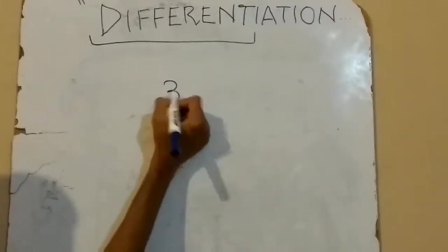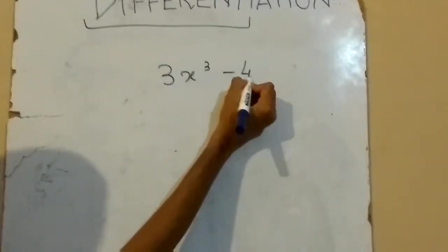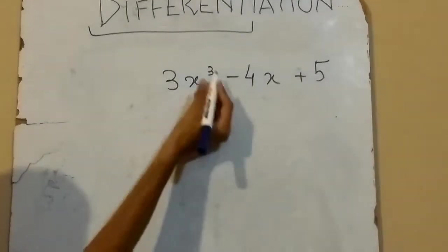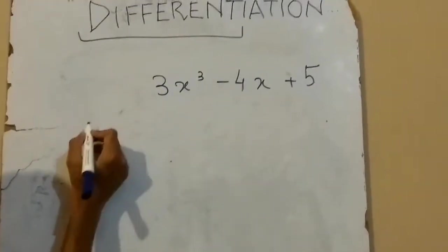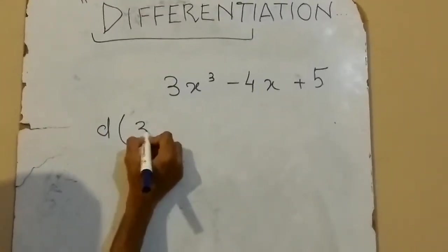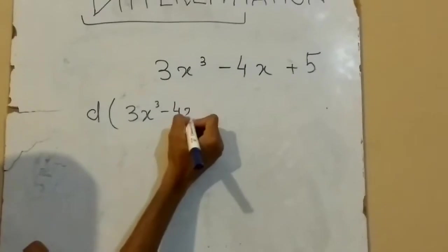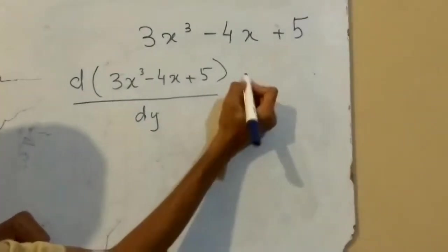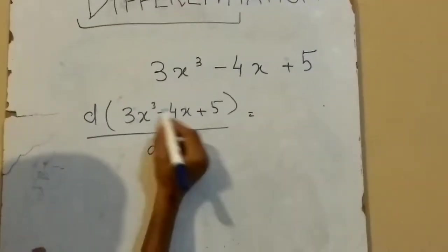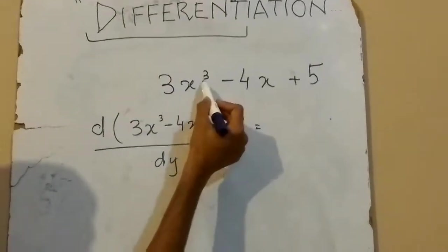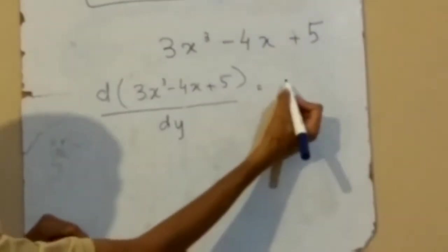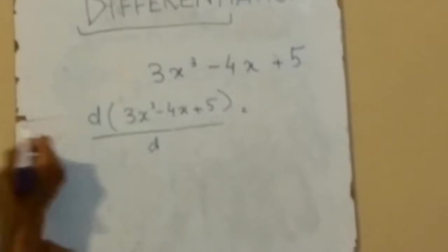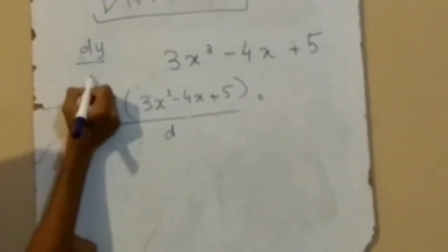If we write 3x³ minus 4x plus 5 and want to differentiate this whole equation, we write it as dy upon dx. Basically, whenever we differentiate anything, it is written as dy upon dx, where dx is always in the denominator.